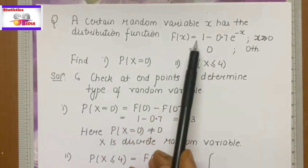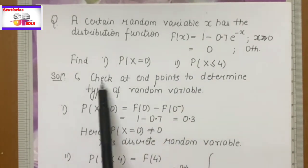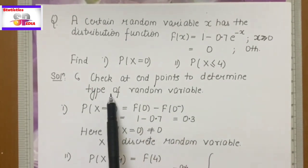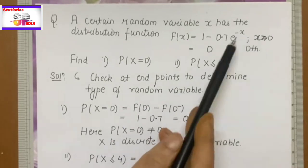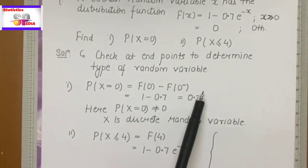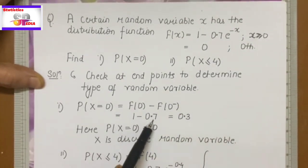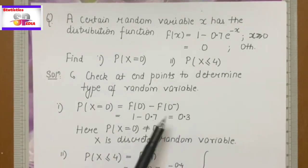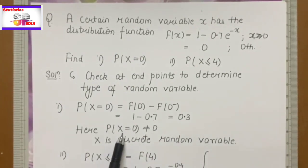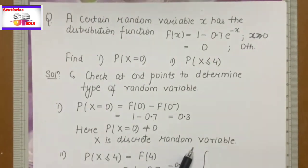The next question: a random variable x is given with a distribution function, and we need to evaluate two probabilities. The first working rule is to check the end points to determine the nature of the random variable. The endpoint here is 0, so we check at 0. The formula: F(0) minus F(0 minus). F(0) — looking at the function where equality holds — equals 1 minus 0.7. For values less than 0, the value is 0. So our answer is 0.3. The probability at a point is not equal to 0, so it is a discrete random variable.